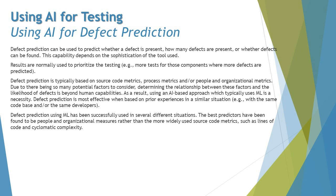When we use error guessing and experience-based techniques, we rely on intuition, past experience, and knowledge of typical defects in certain systems. Similar kinds of metrics should be used to train the AI model. That said, the passage also states that humans cannot have all the capabilities to determine defect predictions — so it seems like a circular dependency. As we apply experience-based techniques, that intuition can be encoded into AI and ML models to do the same job.